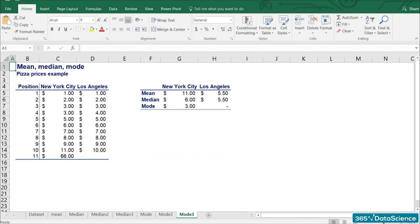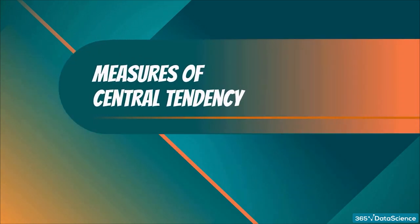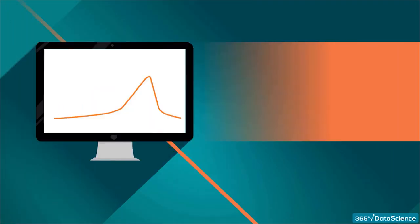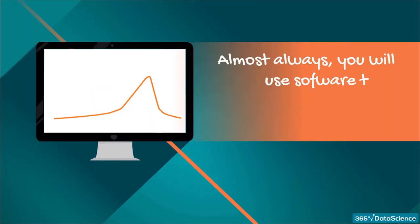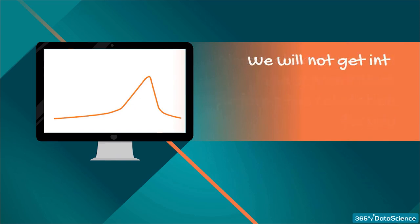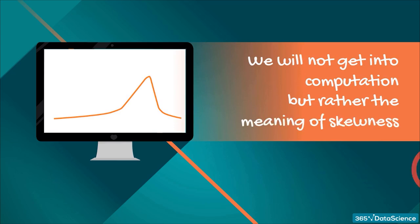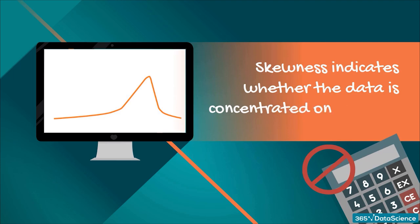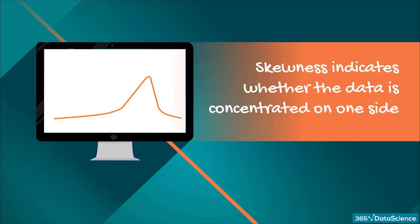Now you know about the mean, median, and mode. After exploring the measures of central tendency, let's move on to the measures of asymmetry. The most commonly used tool to measure asymmetry is skewness. Almost always, you will use software that performs the calculation for you. So in this lesson, we will not get into the computation, but rather the meaning of skewness. Skewness indicates whether the observations in a dataset are concentrated on one side.